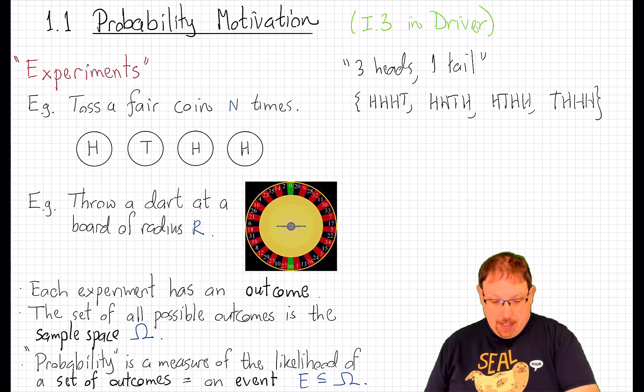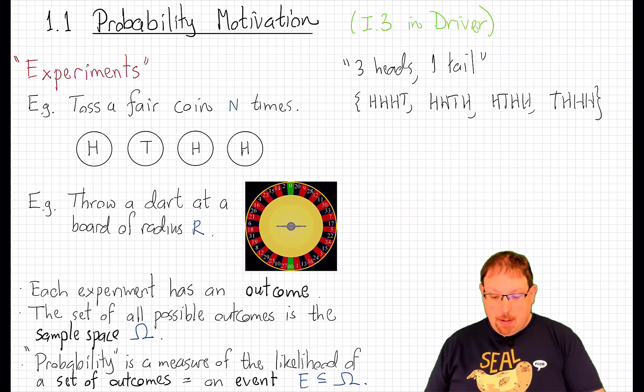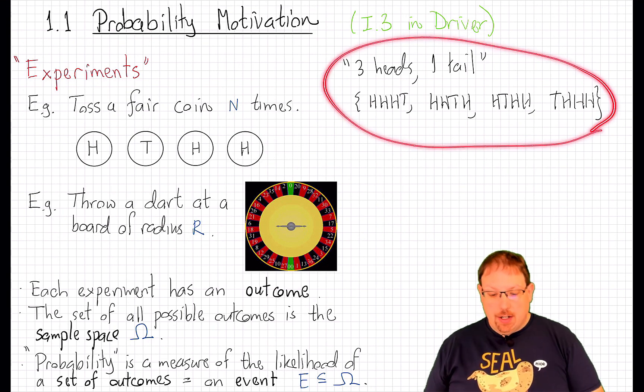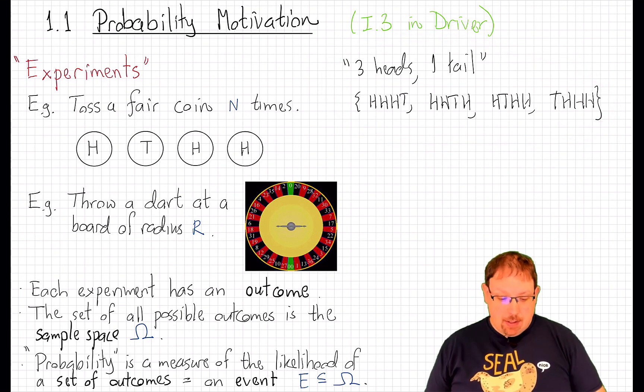There were 16 possible outcomes, and each outcome has equal likelihood. So the probability that this outcome occurred is 1/16th. The probability that this event occurred is 4/16ths, or 1/4.